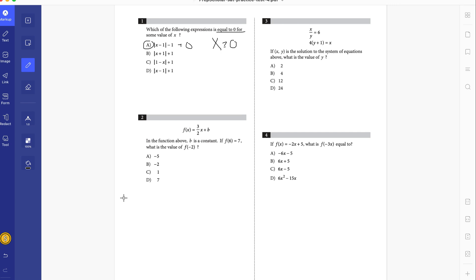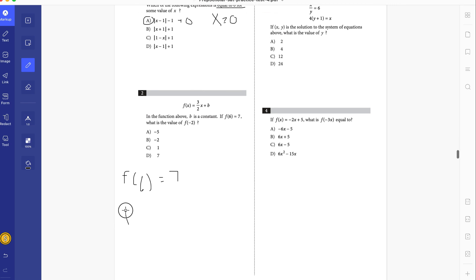The function above, B is a constant. If f of 6 equals 7, what is the value of f of negative 2? So we know f of 6 equals 7. That means you plug in 6. So we have f of 6 is equal to 3 over 2 times 6 plus B. We don't know what B is, so first you have to find B. So 6 times 3 is 18, divided by 2 is 9. So it's equal to 9 plus B, which is equal to 7. So B equals negative 2.